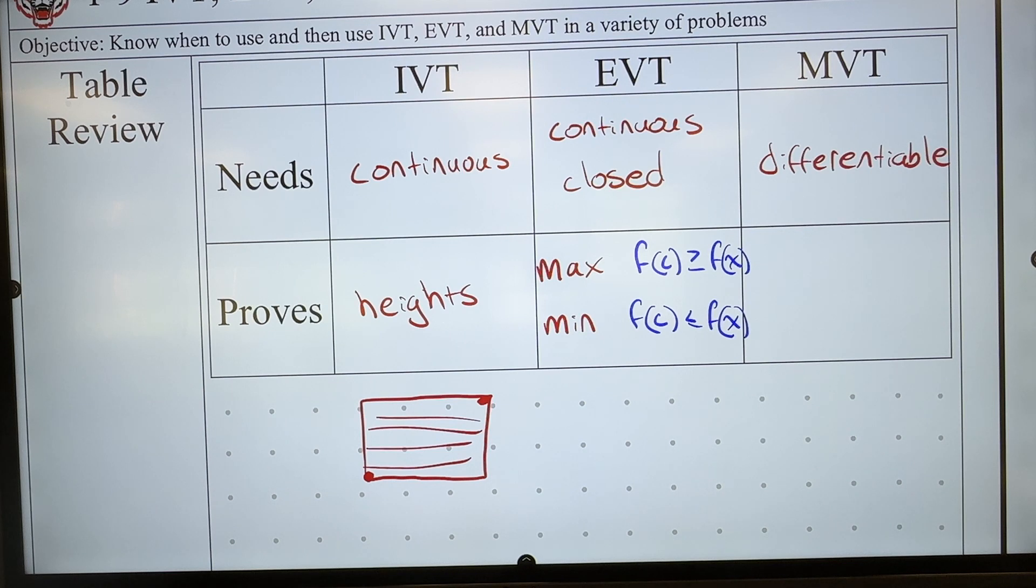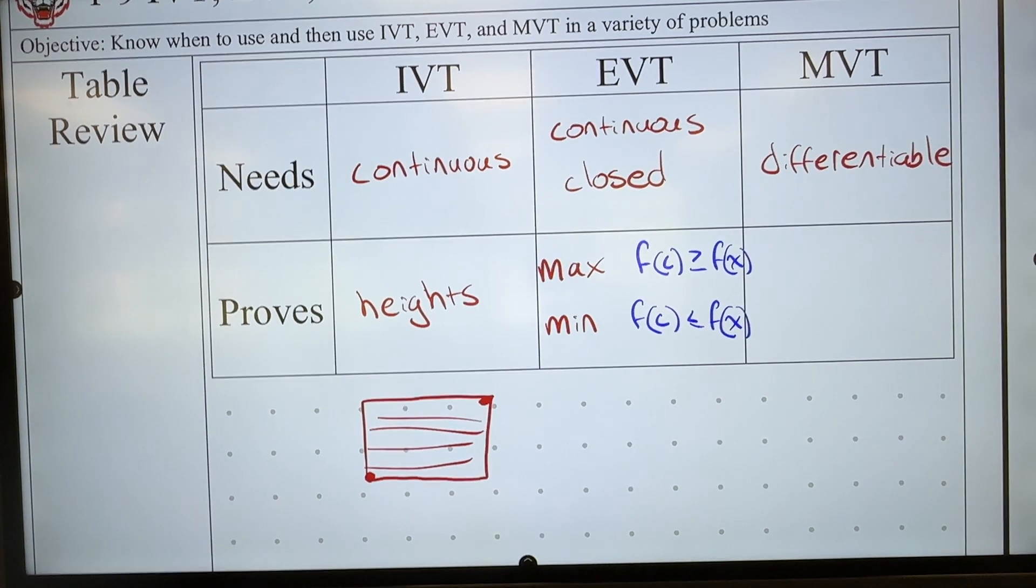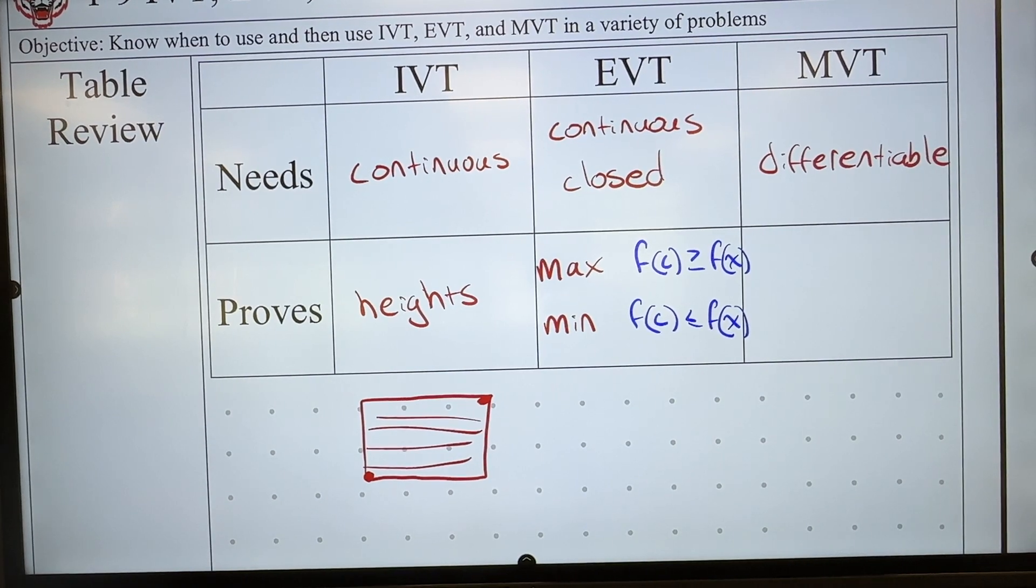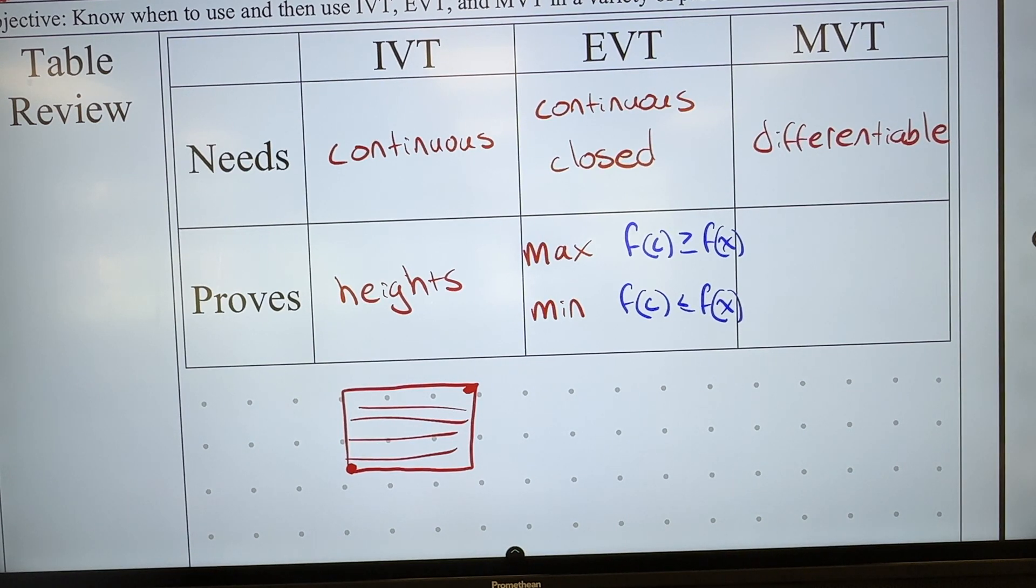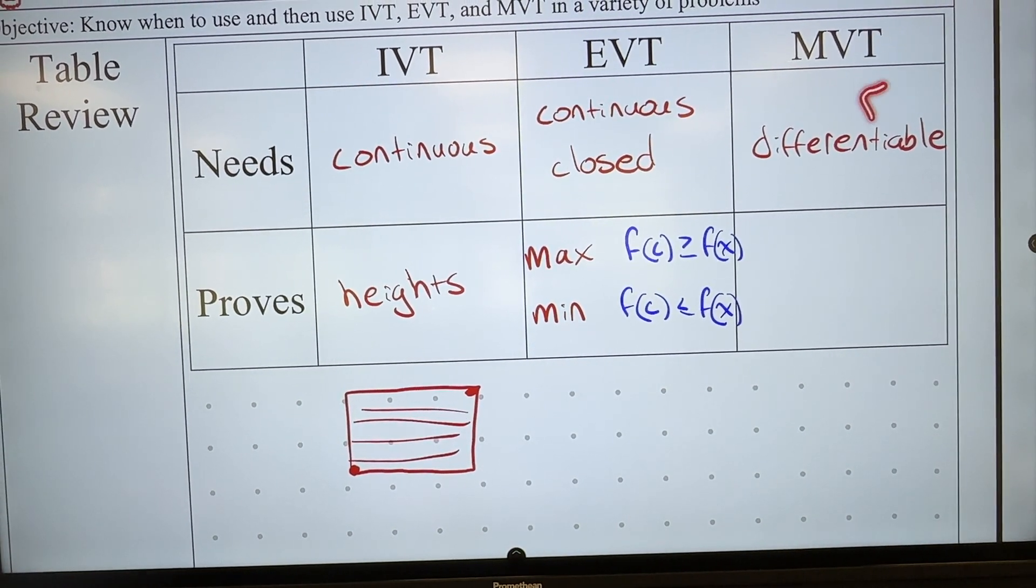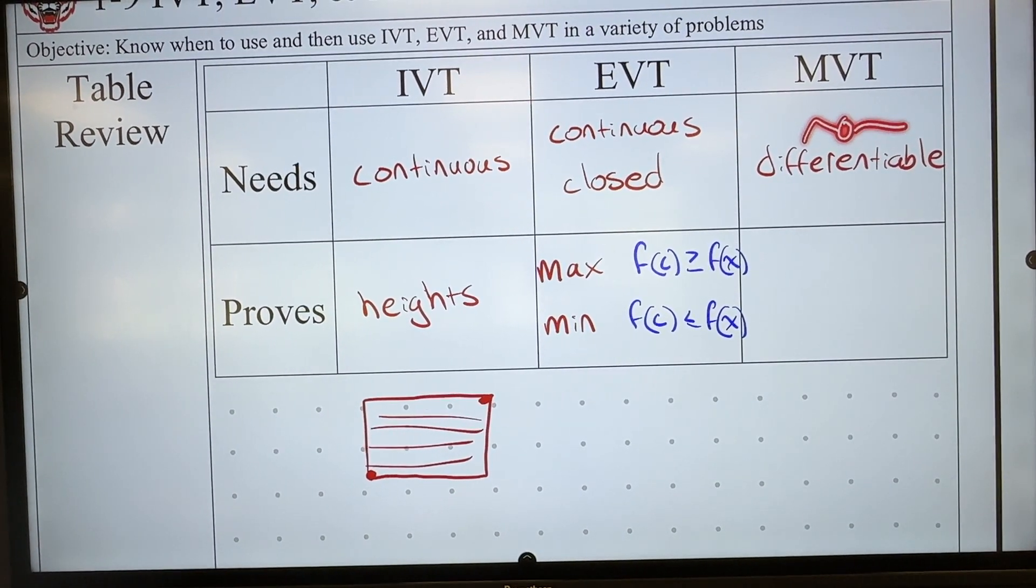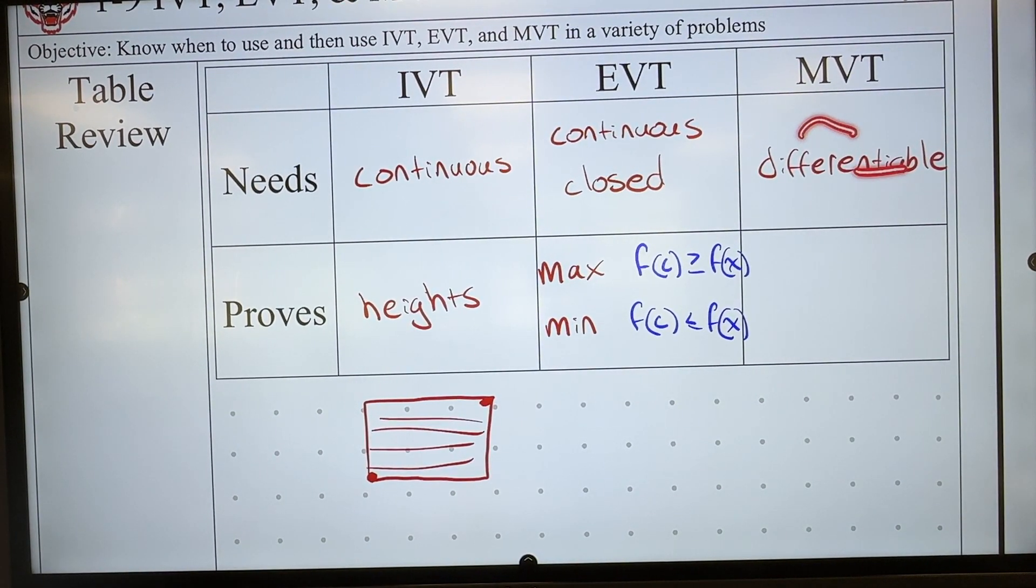It needs to be differentiable, but if you want to add one cool fact about this, then you can. It's technically cheating because differentiable implies... What, Diego? Continuous. Thank you, Diego. It implies continuous. So it's technically two things, differentiable and continuous, but you know just from this one word, differentiable implies it's also continuous. If I have to have no sharp corners, no vertical tangents, it also means I can't have any holes, gaps, vertical asymptotes, and endpoints. Cool. And what does MVT prove? What one word?